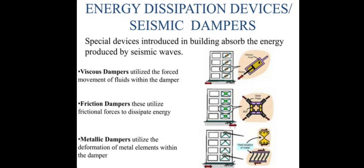Now, what are energy dissipation devices, that is, seismic dampers? Special devices introduced in buildings absorb the energy produced by seismic waves. There are 3 kinds: viscous dampers, friction dampers, and metallic dampers. Viscous dampers utilize the force movements of fluid within the damper, friction dampers utilize frictional force to dissipate energy, and metallic dampers utilize the deformation of metal elements within the damper.